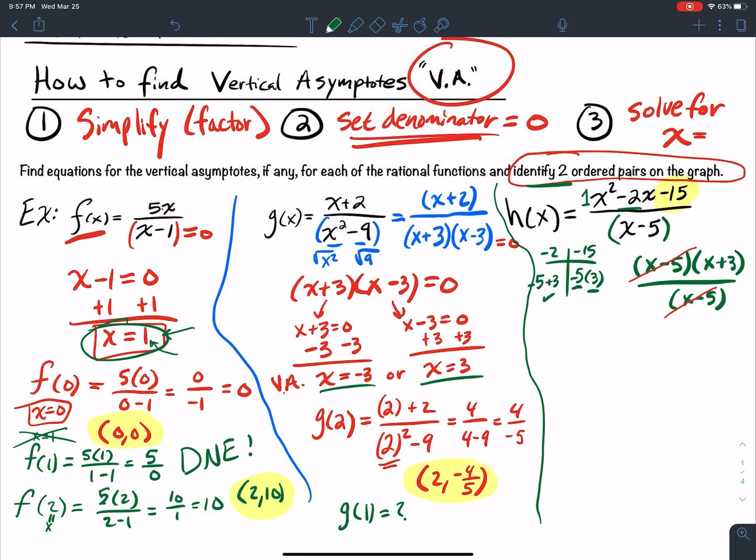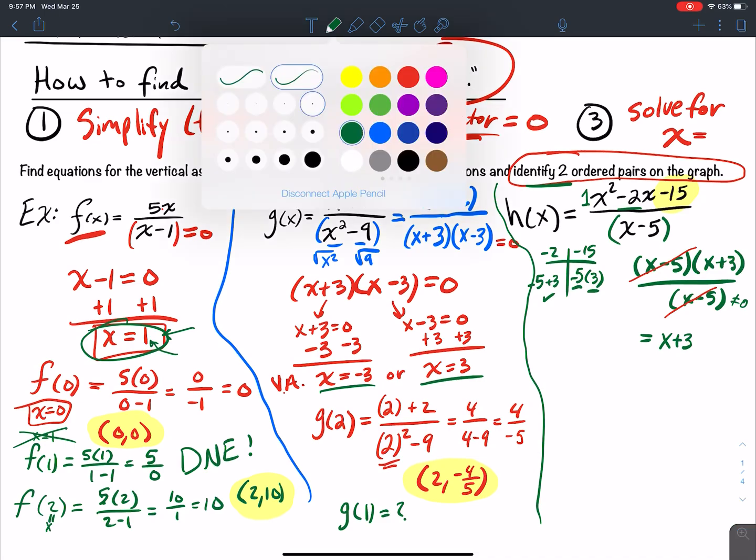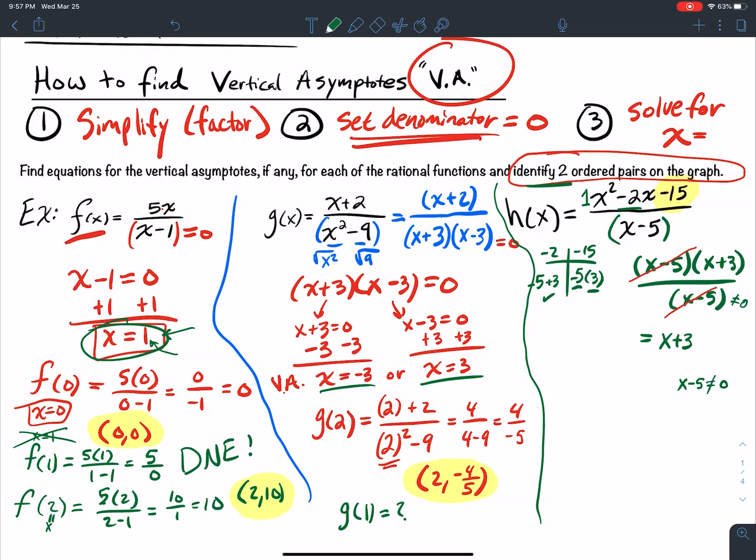And what am I left with? I'm left with just x+3, as long as the factors that I canceled are not equal to 0. So what does that mean? As long as x-5 does not equal 0, I'm good to go. So if I plus 5 to both sides, I get x is not equal to 5. So as long as x does not equal 5. Here's your trick: if you're going to simplify, if you're going to simplify here, then you need to be careful about the factors that you cancel.